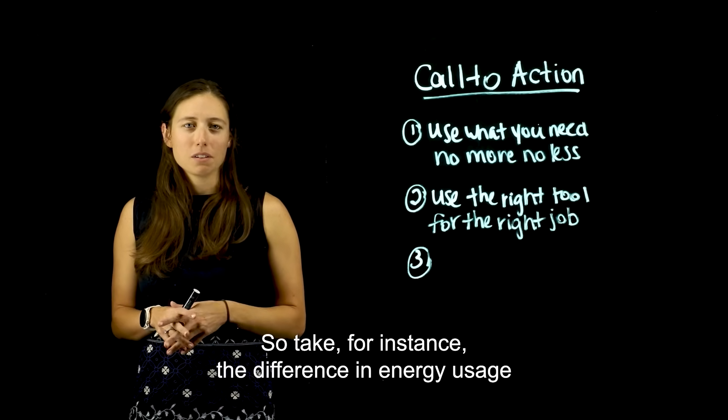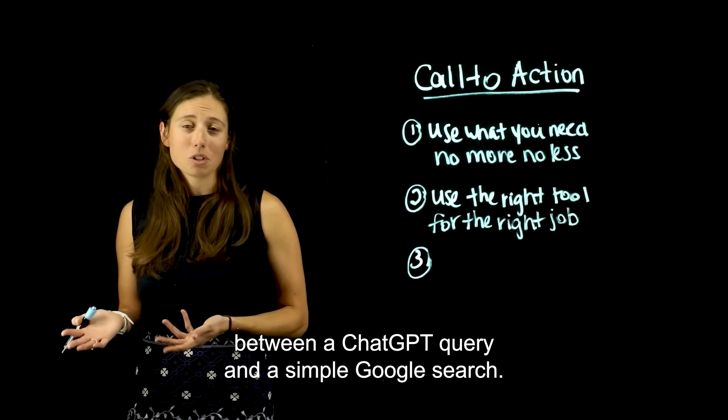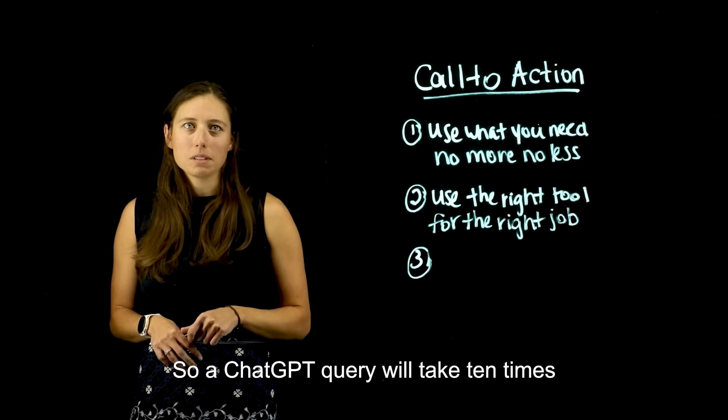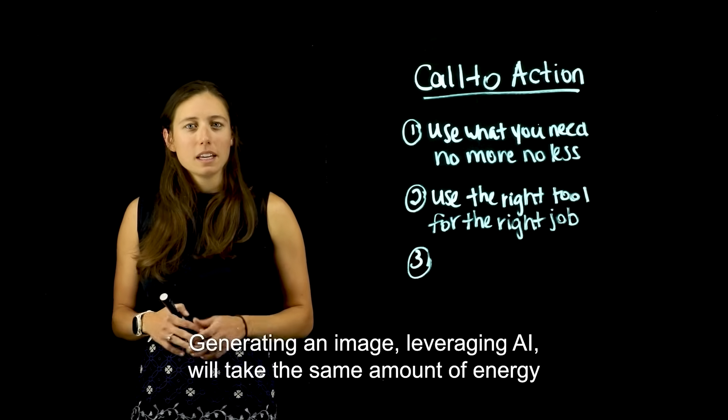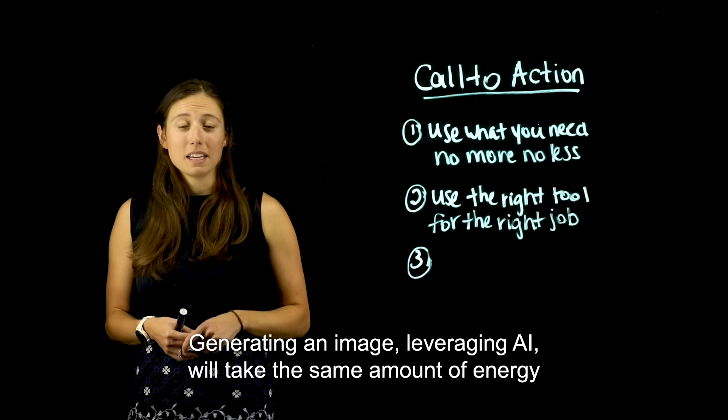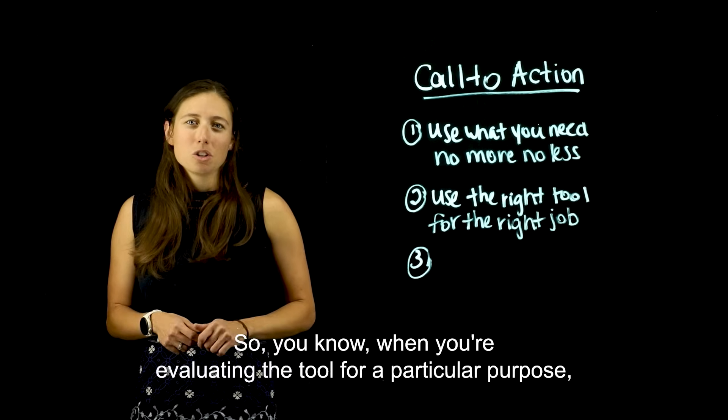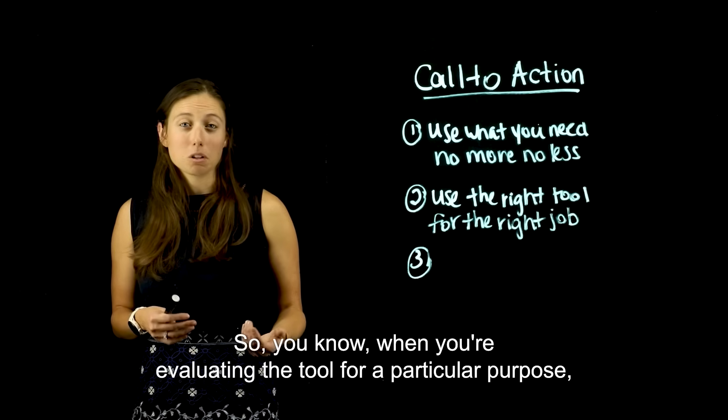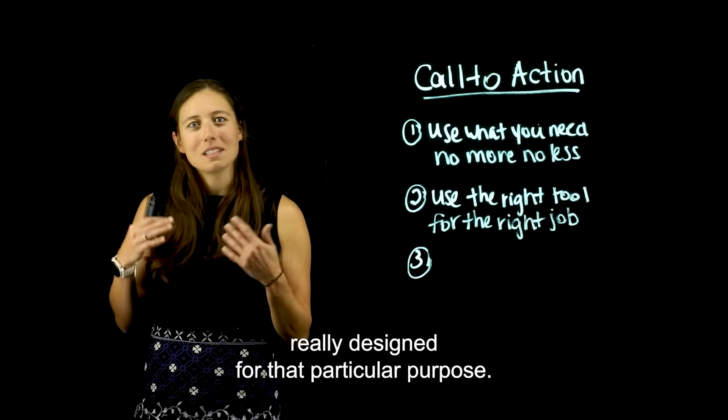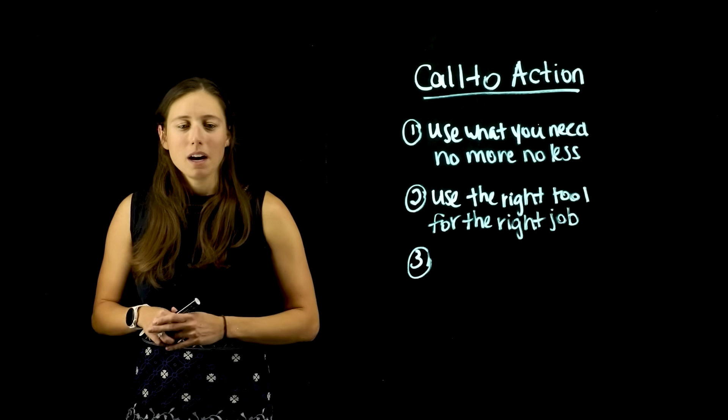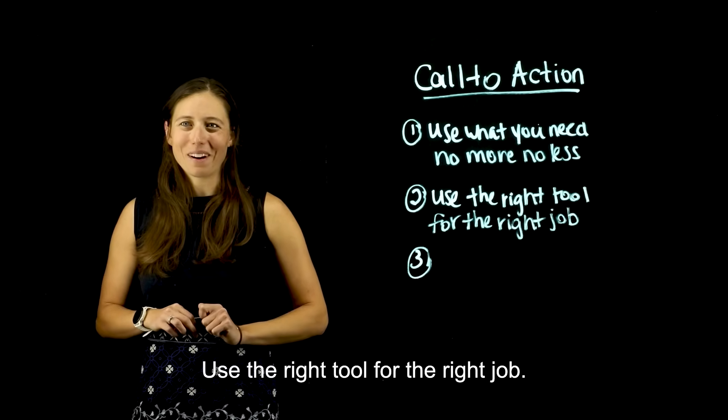So take, for instance, the difference in energy usage between a ChatGPT query and a simple Google search. A ChatGPT query will take 10 times more energy than a simple Google search. Generating an image leveraging AI will take the same amount of energy as it takes to fully charge a smartphone. So when you're evaluating the tool for a particular purpose, consider whether or not that tool is really designed for that particular purpose. Don't overcomplicate things. Use the right tool for the right job.